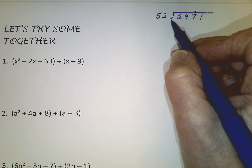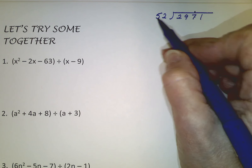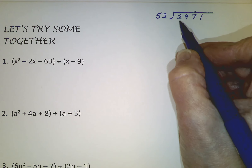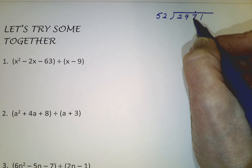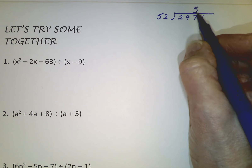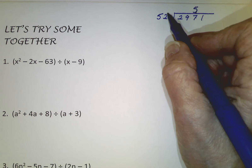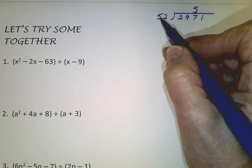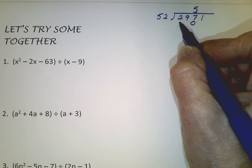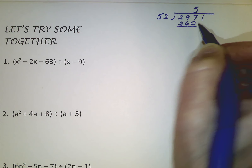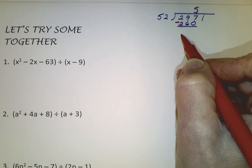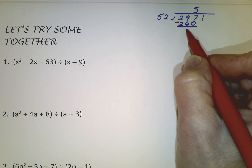Rather than doing this all at once, we take the 5 and ask: about how many times will 5 divide into 29? It won't go evenly, but I'm guessing about 5. Sometimes our first guess is too large, but I'll put the 5 up here over the 7. Then we multiply 5 times the entire 52 — not just the 5, but the entire 52. So 5 times 2 is 10, 5 times 5 plus the 1 is 26. Then the next step is to subtract after multiplying by the entire divisor, giving us 37.